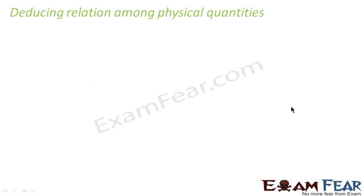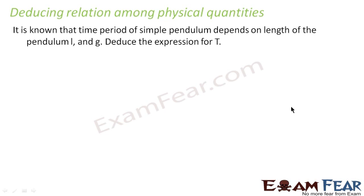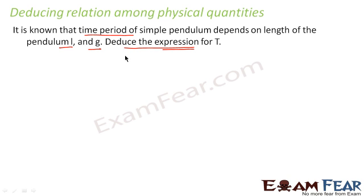Let us take another example to show the application of dimensional analysis — deducing relations among physical quantities. We know that the time period of a simple pendulum depends on the length of the pendulum L and the acceleration due to gravity g. If asked to deduce the expression for T using dimensional analysis, how would we do that?